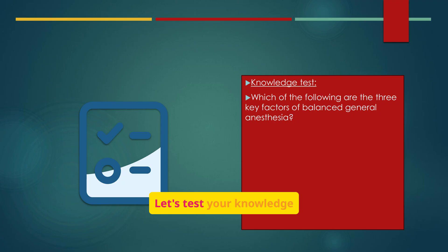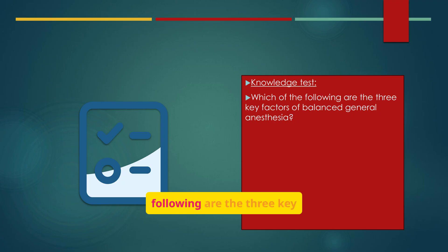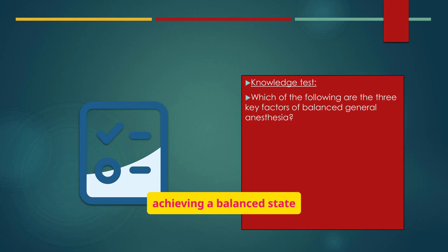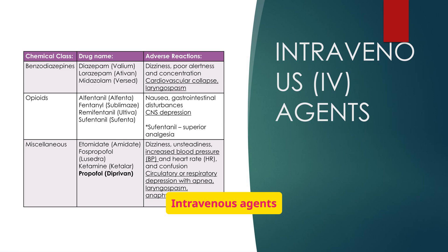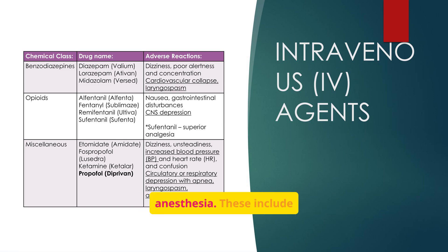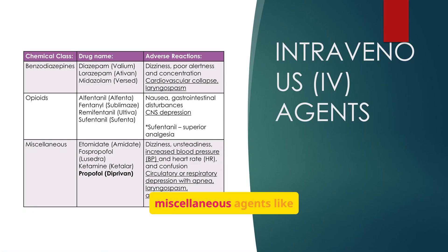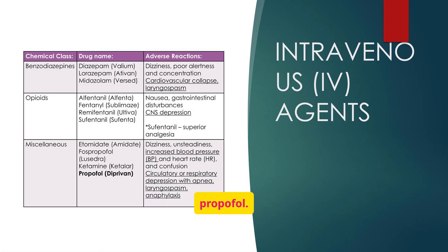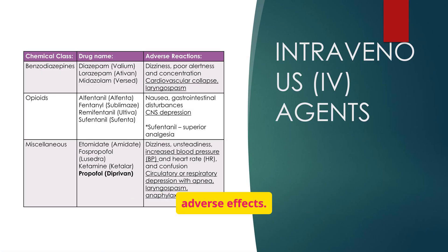Intravenous agents are commonly used to induce and maintain anesthesia. These include benzodiazepines, opioids, and miscellaneous agents like etomidate, ketamine, and propofol. Each agent has its own unique properties and potential adverse effects.